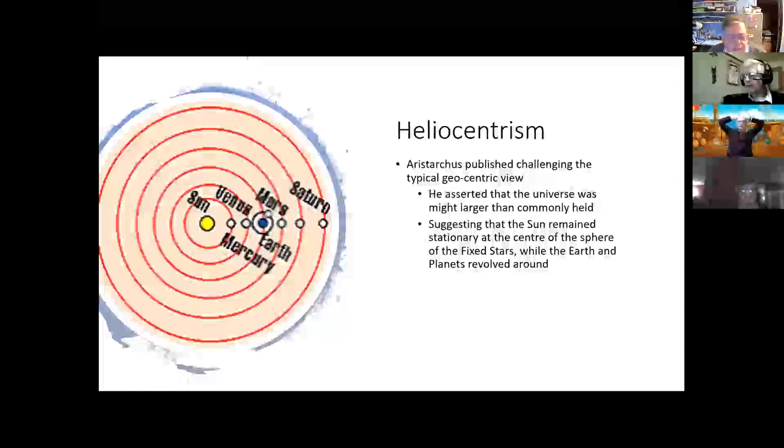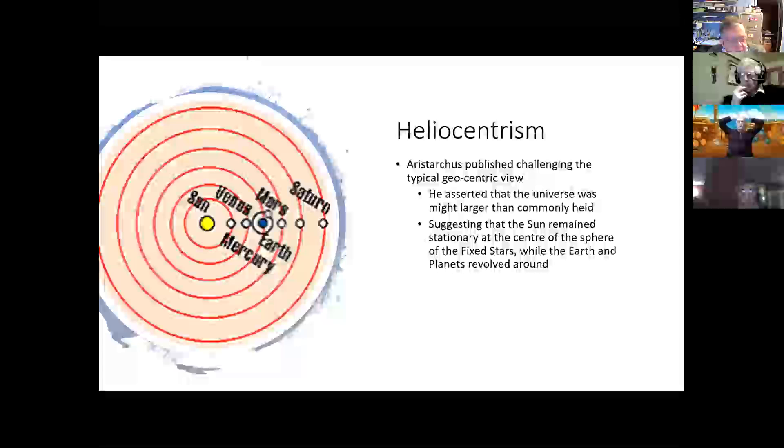But the first thing that he came up with was the idea that, in fact, instead of having the earth at the centre, as Brian was talking about, that the sun should go at the centre. Now, most people think that this was an idea put forward by Copernicus much later, so 2,000 years later. But it's the case that Aristarchus was certainly one of a number of people putting this idea around much longer ago.